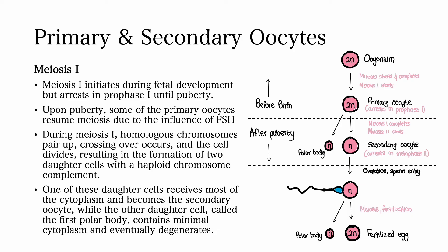Meiosis I initiates during fetal development but arrests in prophase I. This arrest occurs until puberty. At this stage, the primary oocytes derived from the oogonia are arrested. Upon puberty, some of the primary oocytes resume meiosis due to the influence of follicle-stimulating hormone, also known as FSH.